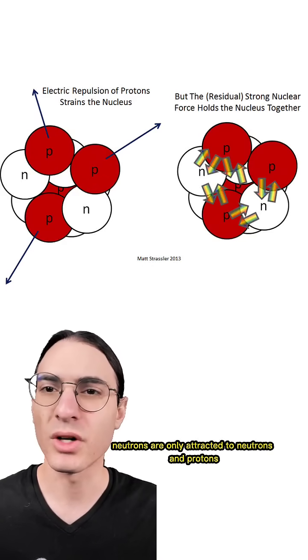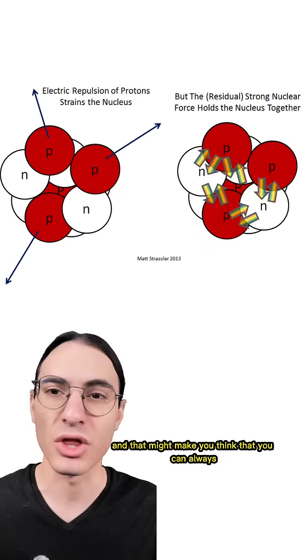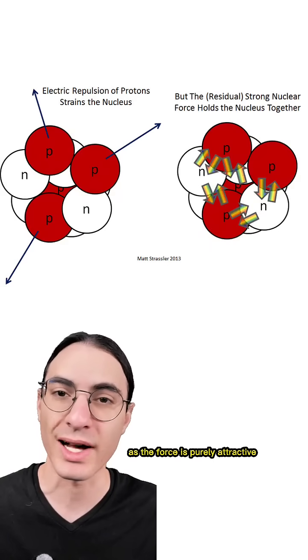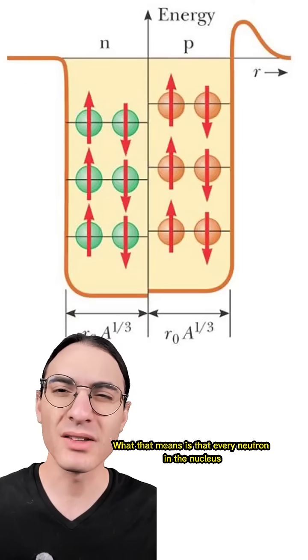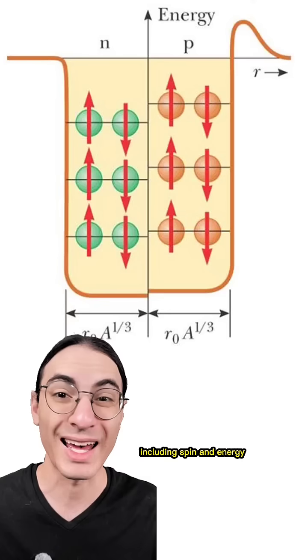See, in principle, neutrons are only attracted to neutrons and protons via the strong nuclear force. And that might make you think that you can always just keep adding more to increase stability, as the force is purely attractive. But it's not that simple because neutrons are fermions. What that means is that every neutron in the nucleus has to be in a different state, including spin and energy.